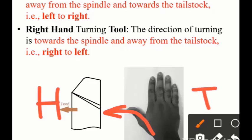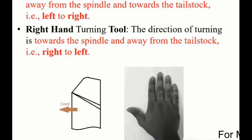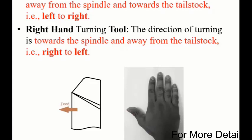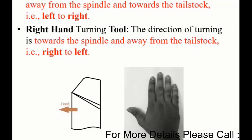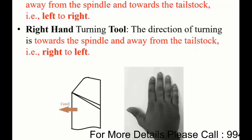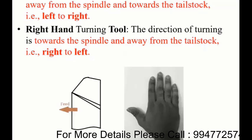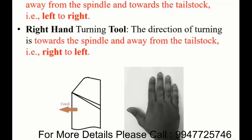You start at the tailstock and move towards the headstock. The direction goes from the tailstock towards the headstock - that is the opposite direction, and those are all the tools for the right-hand tool.